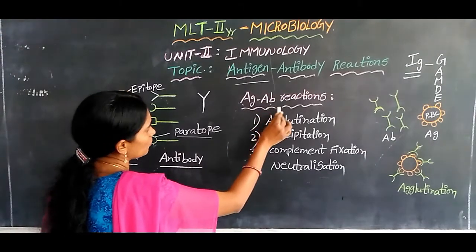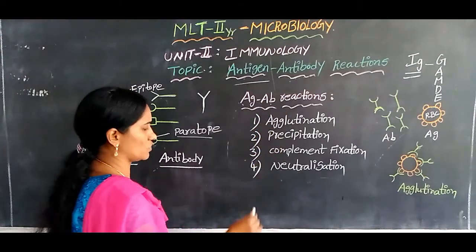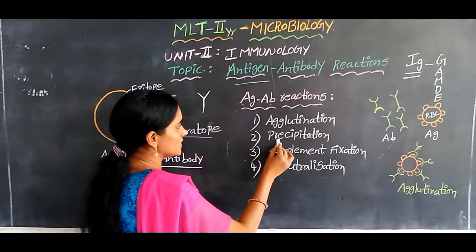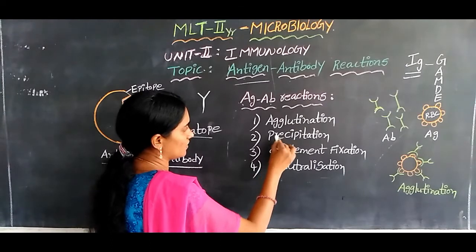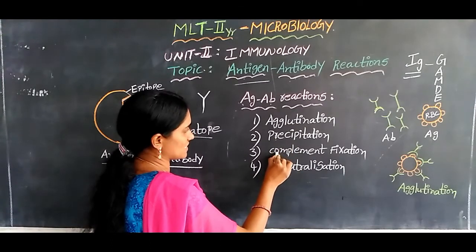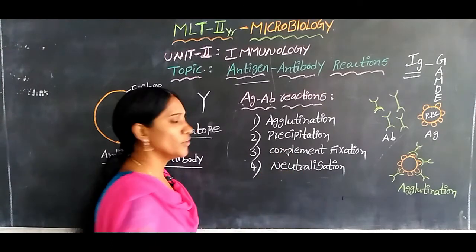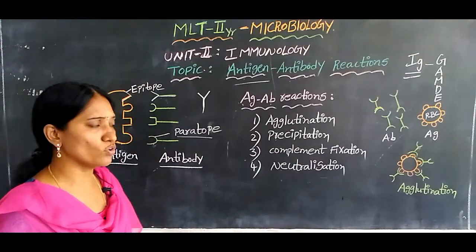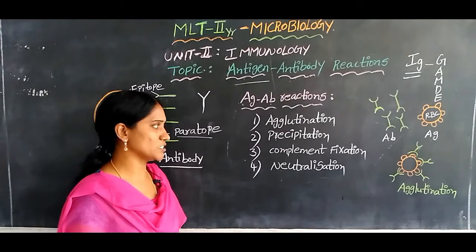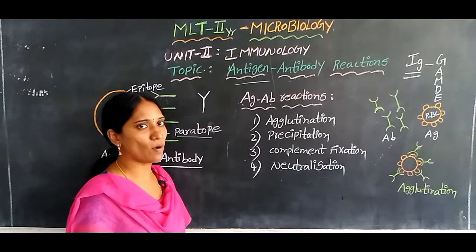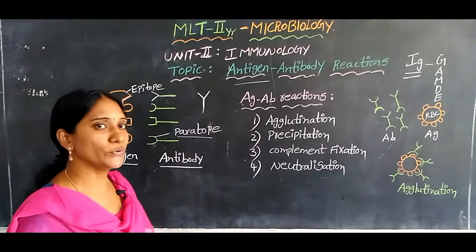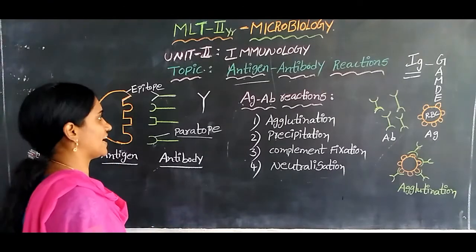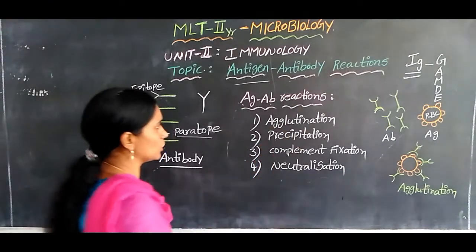Antigen-antibody reactions are mainly four types: the first is agglutination, the second is precipitation, the third is complement fixation, and the fourth is neutralization.